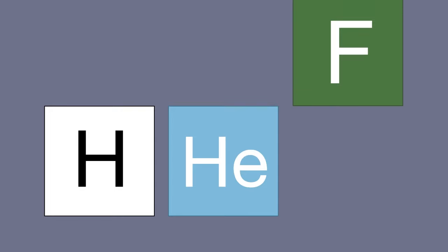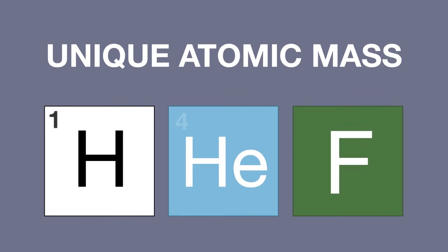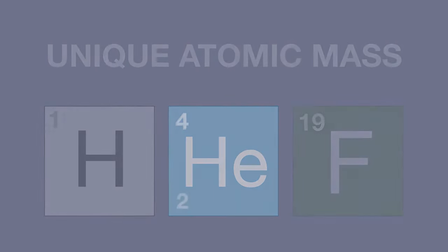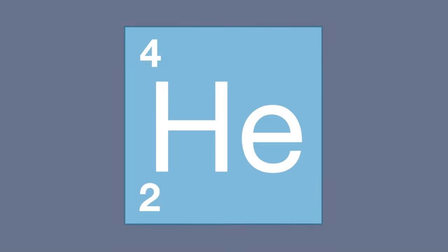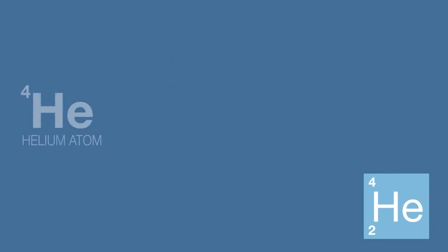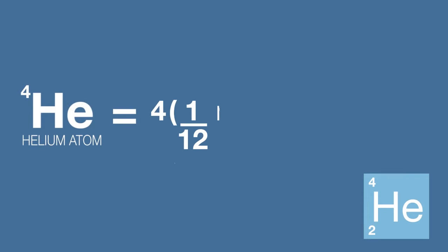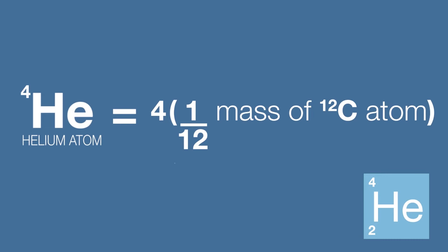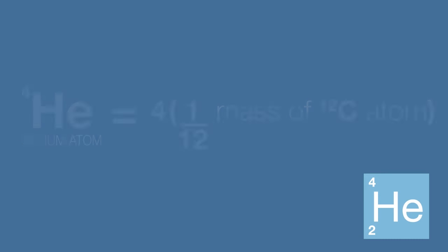Every atom has its own unique atomic mass based on this relative scale. Our earlier example of helium had an atomic mass of four. In full, this means that the helium atom has a mass of four times one-twelfth of the mass of a carbon-12 atom. Of course, it's far easier to write this as four.